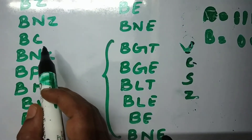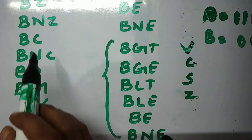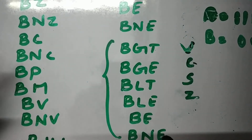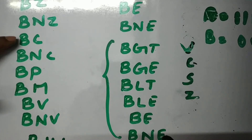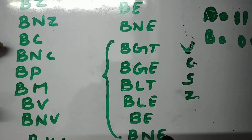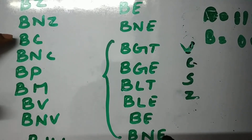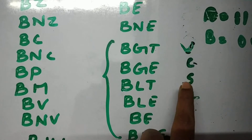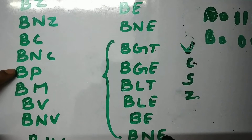Branch if carry is executed when the carry value is one. If the carry value is not one, the branch instruction will not execute — the processor simply continues with the next instruction. Branch if not carry follows the same logic inversely. Branch if positive and branch if minus are executed based on the value of the sign bit: if the sign bit indicates a positive result, branch if positive executes; if it indicates negative, branch if minus executes.